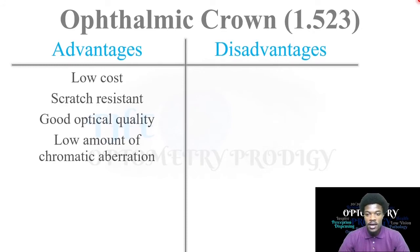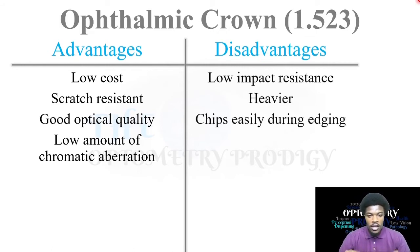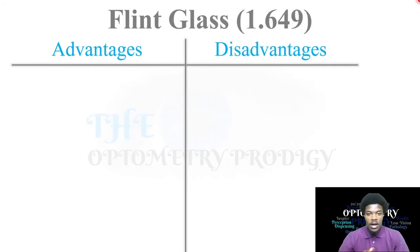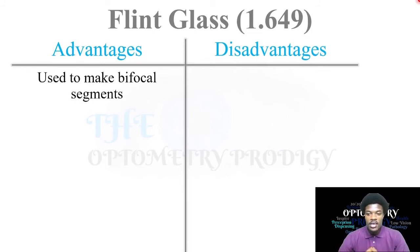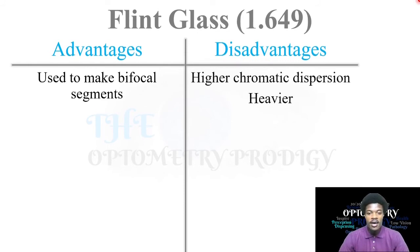Ophthalmic crown glass has a refractive index of 1.523. The advantages are low cost, scratch resistant, good optical quality, and a low amount of chromatic aberration. The cons are low impact resistance, it is heavier than plastics, and chips easily during edging. Flint glass has a refractive index of 1.649 — a high refractive index — but with increasing chromatic dispersion. It is used mostly for bifocal segments, and its main disadvantage is higher chromatic dispersion within the glass line of materials.